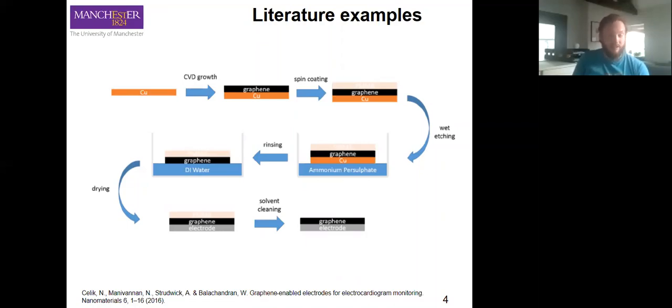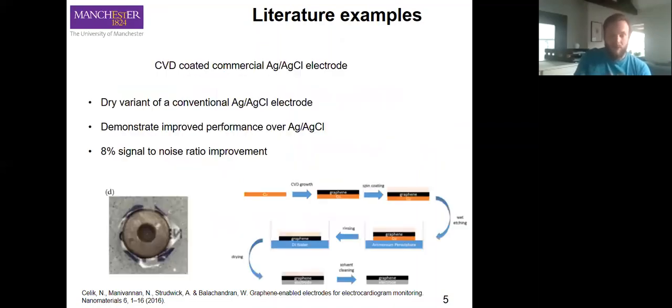We have some graphene coated conventional silver silver chloride electrodes. ECG is typically performed using silver silver chloride electrodes. In this case, they've been coated with CVD graphene. This is a slight variant of a conventional silver silver chloride electrode. The source is below if anyone's particularly interested.